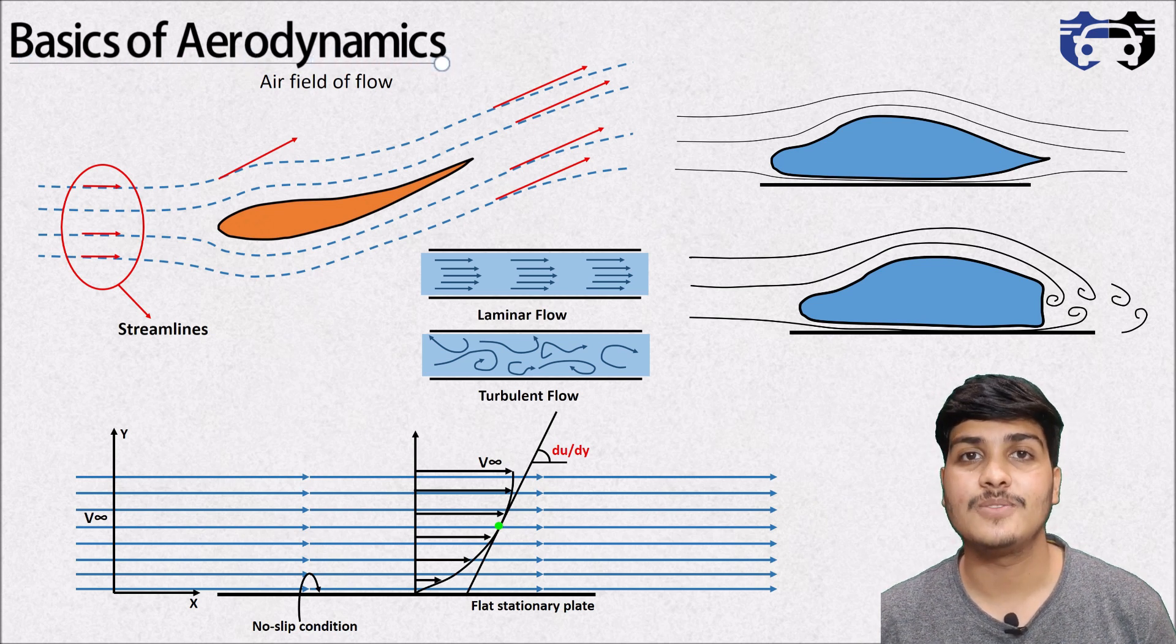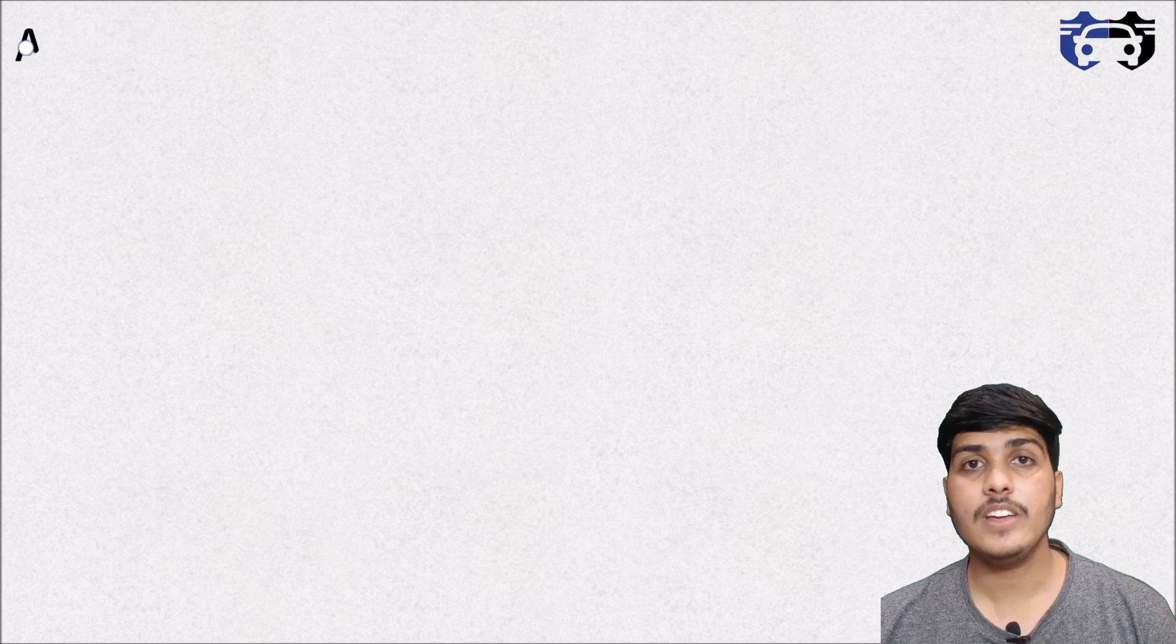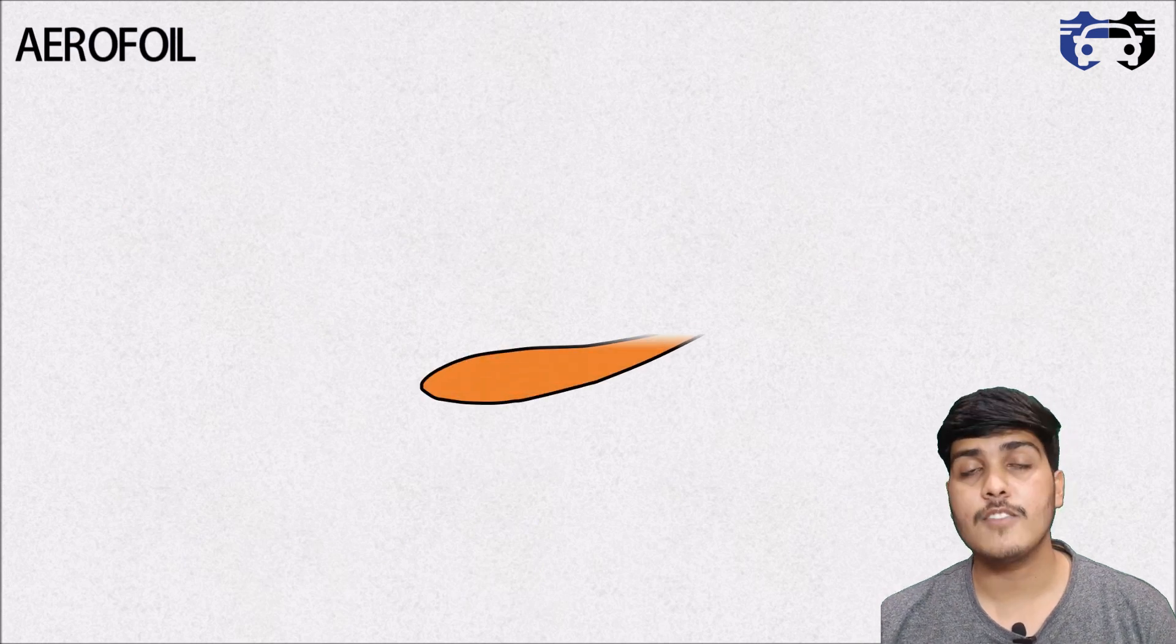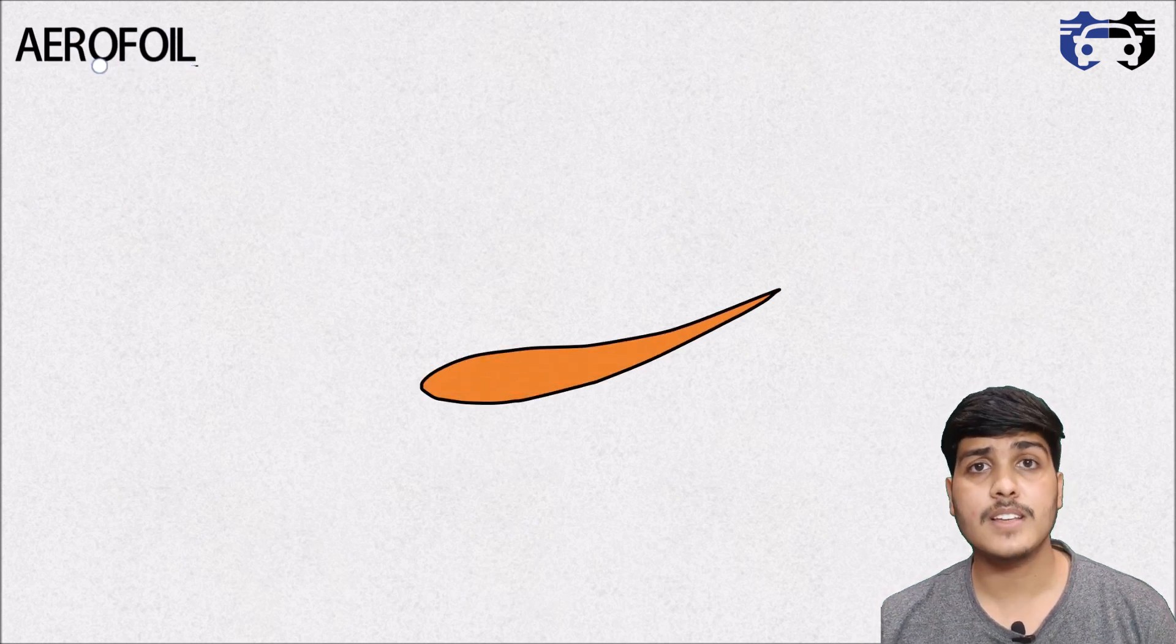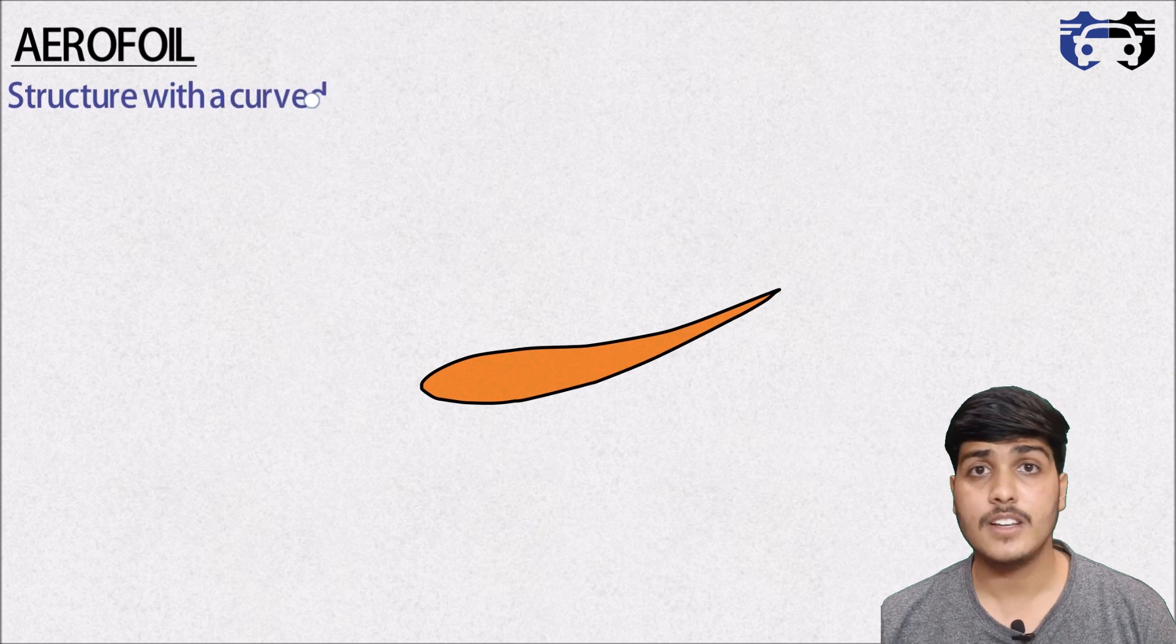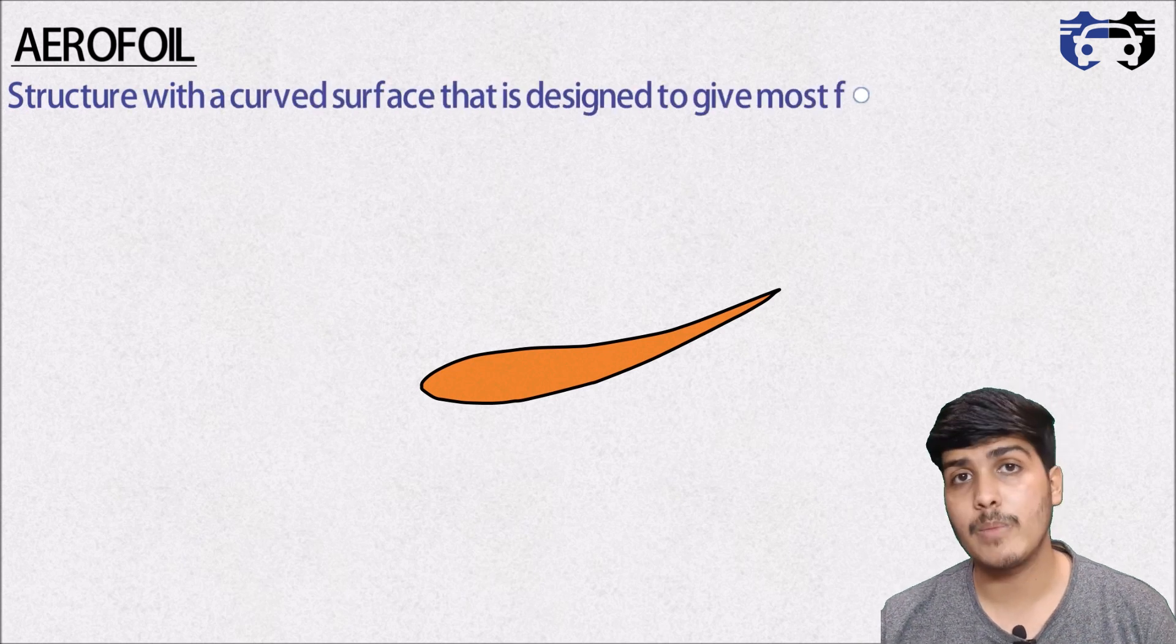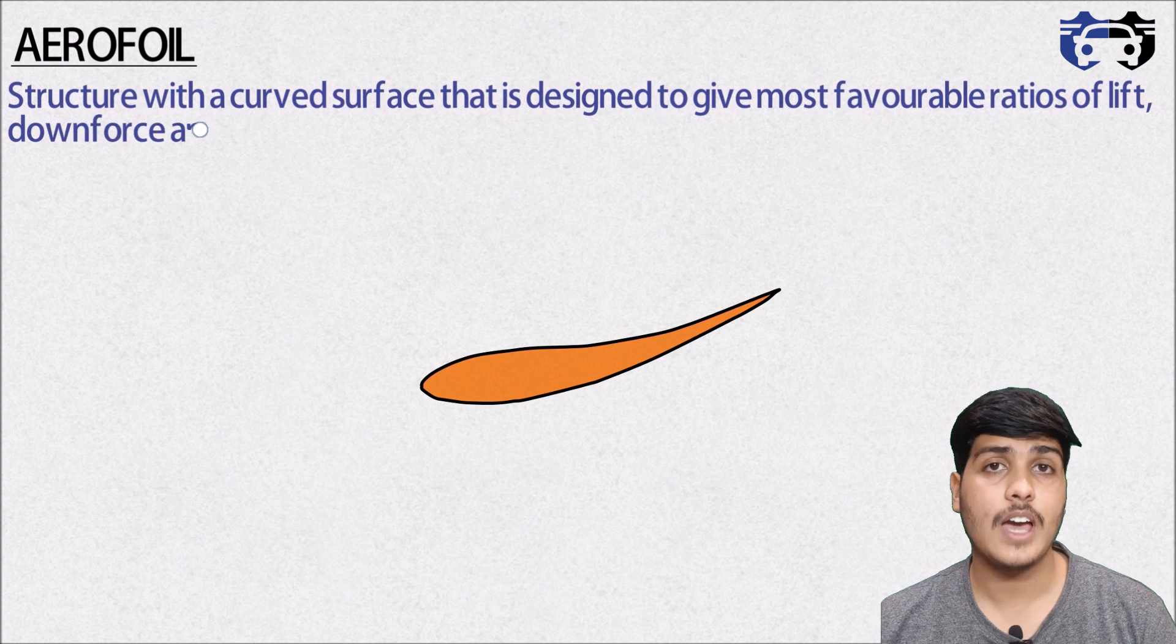Starting with the most common geometry, the aerofoil. Here you can see we are having an aerofoil. It's basically a structure with a curved surface that is designed to give the most favorable ratios of lift, downforce and drag.